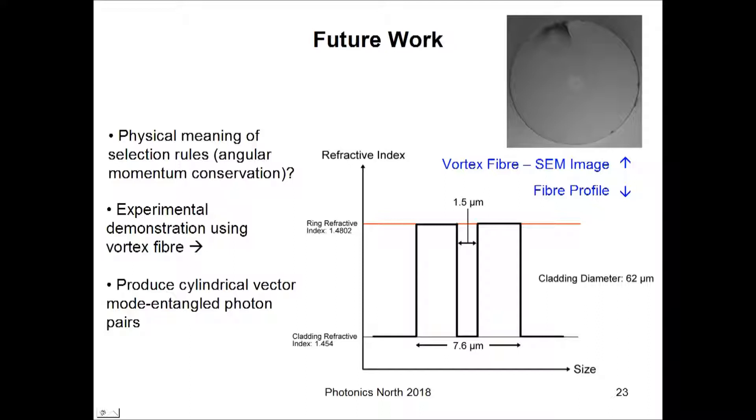Of course, experimentally verifying this work is important. The goal is to use a vortex fiber, which looks like this and has an index profile that supports OAM-containing modes, in order to experimentally verify these selection rules. And also back to the original goal, which was to produce cylindrical vector mode-entangled photon pairs. And so, being able to do that would also be something to work towards.